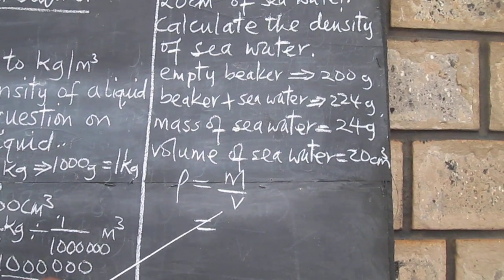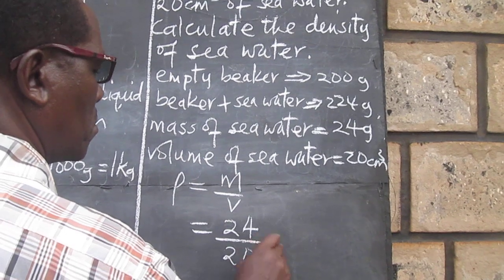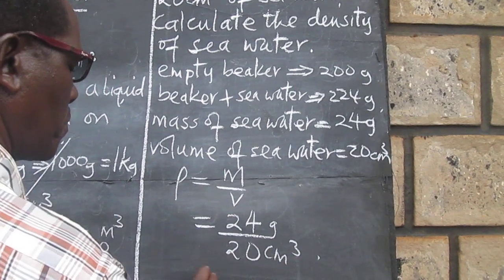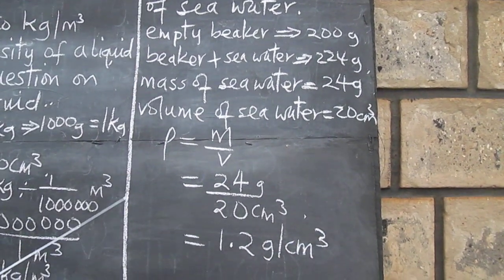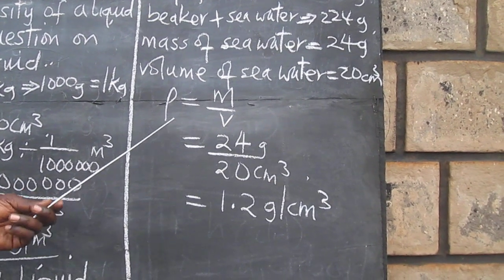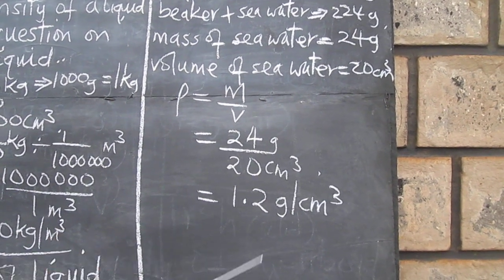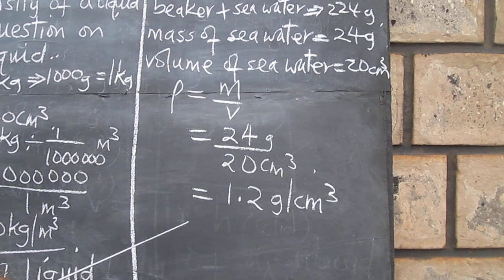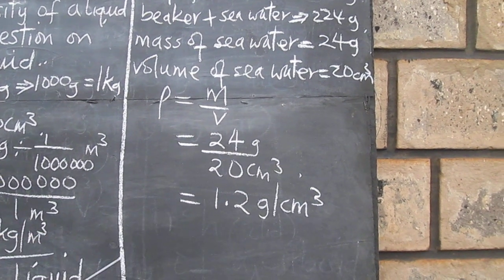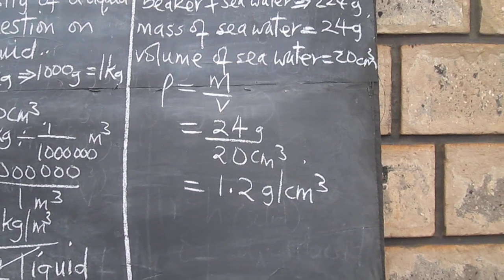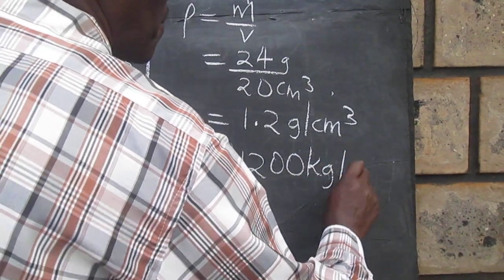After substitution we will get density equals mass over volume, and that is going to give us 24 gram divided by 20 cubic centimeter, which is equal to 1.2 gram per cubic centimeter. We can now convert this by multiplying by 1000, so that we get the density equal to 1200 kilogram per meter cubed.